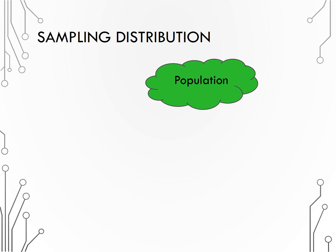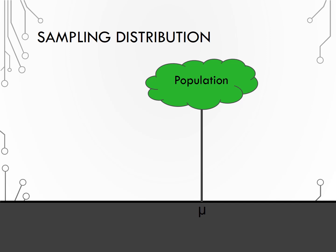Recall the point of statistics is to learn about an unknown population, like trying to estimate a population mean, mu. If we draw a sample from a population and calculate a statistic like a sample mean, we know that the sample mean will fall close to the population mean, similar to a seed falling close to the base of a tree. But if we collected a different sample, we would get a different statistic. This is the crux of our problem. We need to know how different the sample statistics would be if we were able to actually gather multiple samples — in other words, we need to estimate the sampling variability, or the standard deviation of the statistics from many different samples.